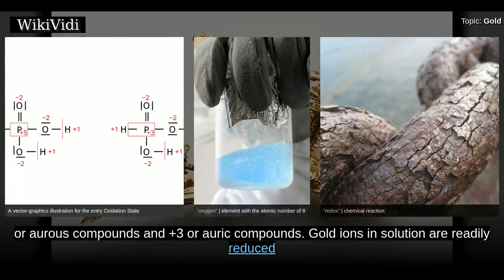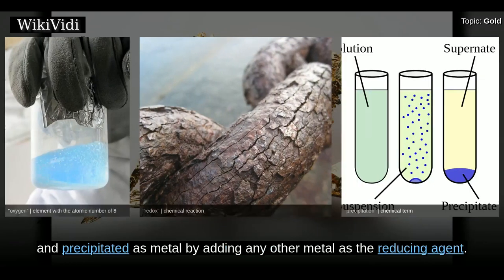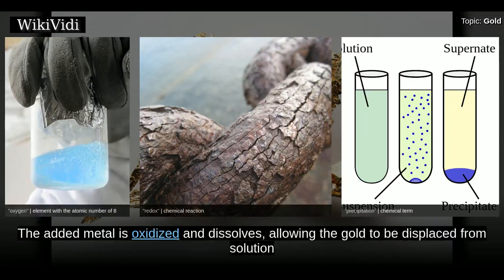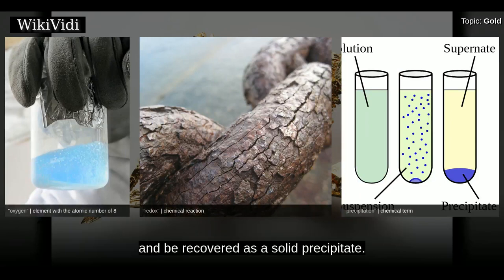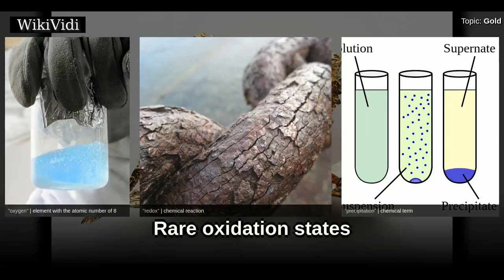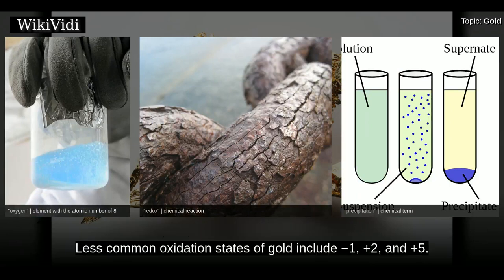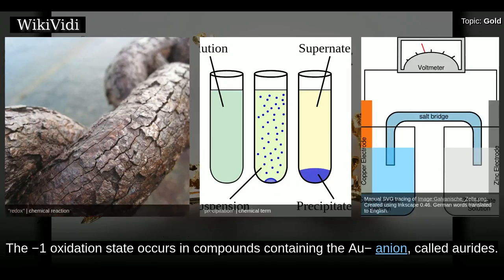Common oxidation states of gold include +1 (aurous compounds) and +3 (auric compounds). Gold ions in solution are readily reduced and precipitated as metal by adding any other metal as the reducing agent. The added metal is oxidized and dissolves, allowing the gold to be displaced from solution and recovered as a solid precipitate. Less common oxidation states of gold include −1, +2 and +5.